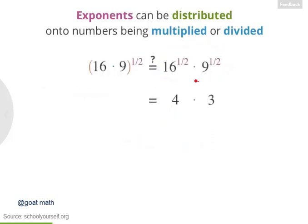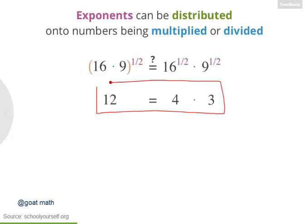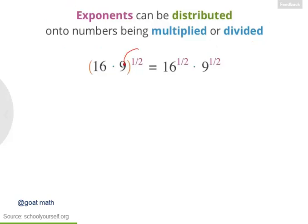So the right side of this equation is the same as 4 times 3. Now let's look at the left side. 16 times 9 is 144, so this is 144 to the 1 half power. The square root of 144 is 12, so 144 to the 1 half is 12. This equation is saying that 12 equals 4 times 3 — so yes, this equation is definitely correct, and this rule about distributing exponents works even when the exponents are fractions, like 1 half.